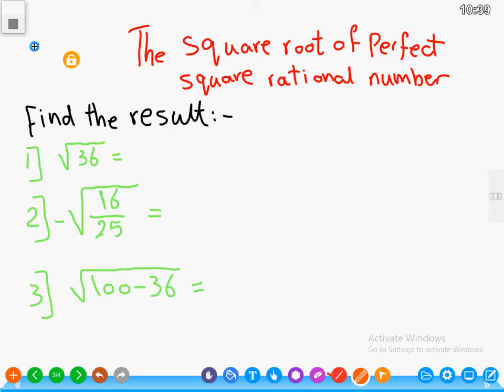The number is six. Number two: negative root 16 over 25. When we see a negative sign, we put negative and find the root of 16 equals 4.